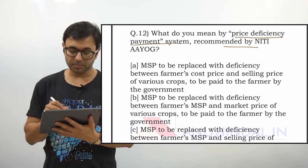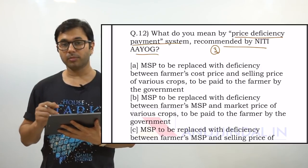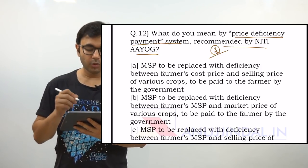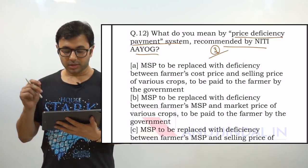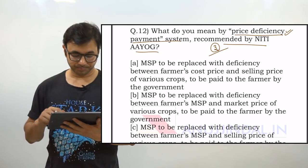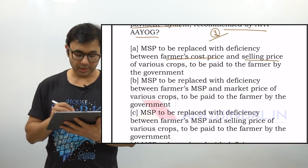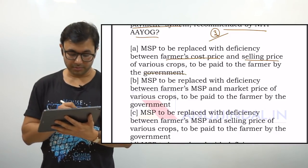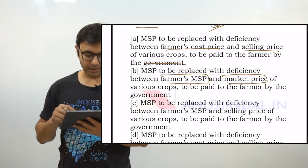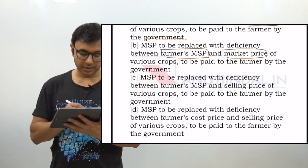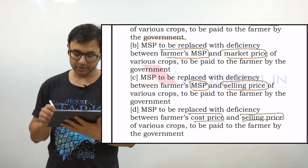The next question is: what do you mean by the Price Deficiency Payment System recommended by NITI Aayog? This is a very important question. A total of three recommendations have been made, and one question out of these three is certain to be asked in the examination. The options are: A) MSP to be replaced with deficiency between farmers' cost price and selling price; B) MSP to be replaced with deficiency between farmers' MSP and market price; C) MSP to be replaced with deficiency between farmers' MSP and selling price.